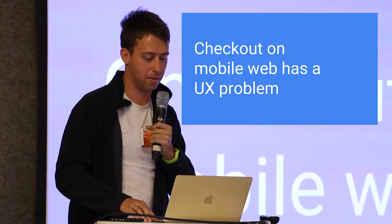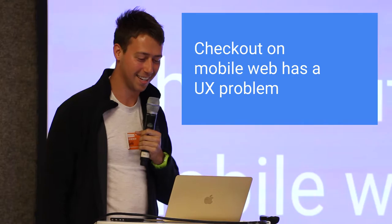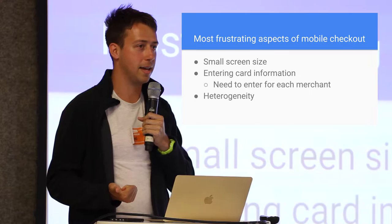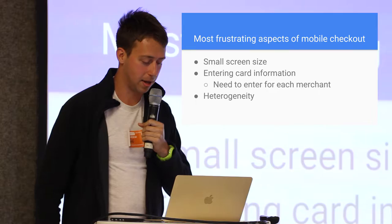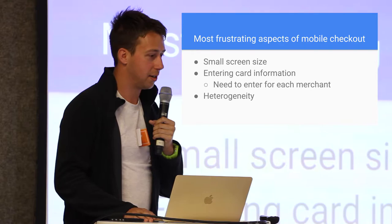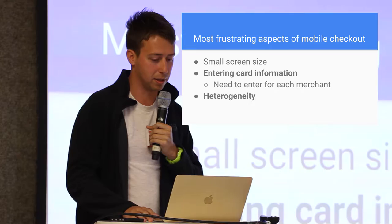If I had to put together a list of what the problems are with mobile web checkout UX: one is small screen size; another is entering card information and having to enter it every single time — I can never remember my credit card number; and the third is heterogeneity — everybody is building their own checkout and you have to get used to a different checkout every time. I'm not a hardware engineer so I can't do much about screen size, but I think we can do something about the last two.